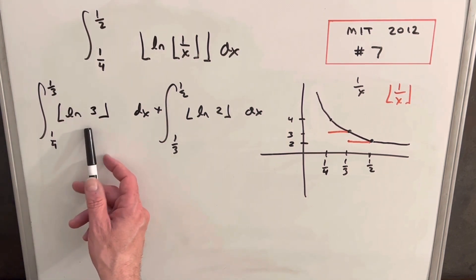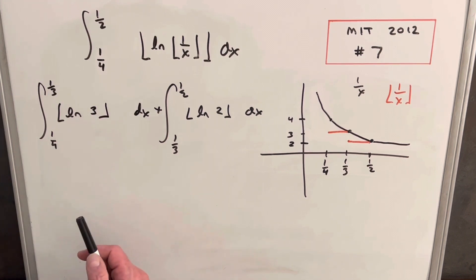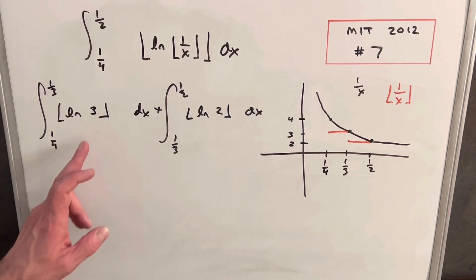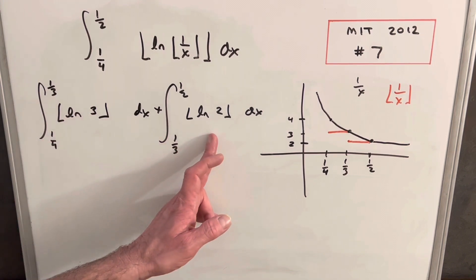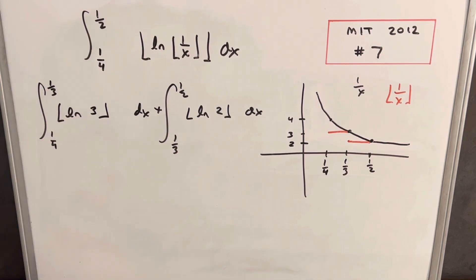Okay, and here, notice that these are just, this is just going to be a number here. So when we get to the, we can figure out what this number is, the integral is going to be very easy, but it's basically just like integrating one. We're just going to have an x. So I think all we need to do to finish this off is just to be able to evaluate this. What's natural log of, what's the floor of natural log of three? What's the floor of natural log of two?